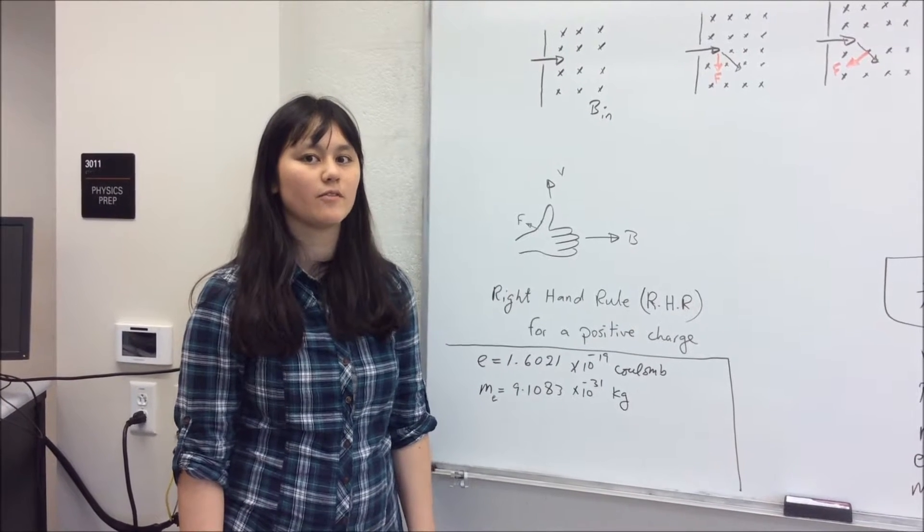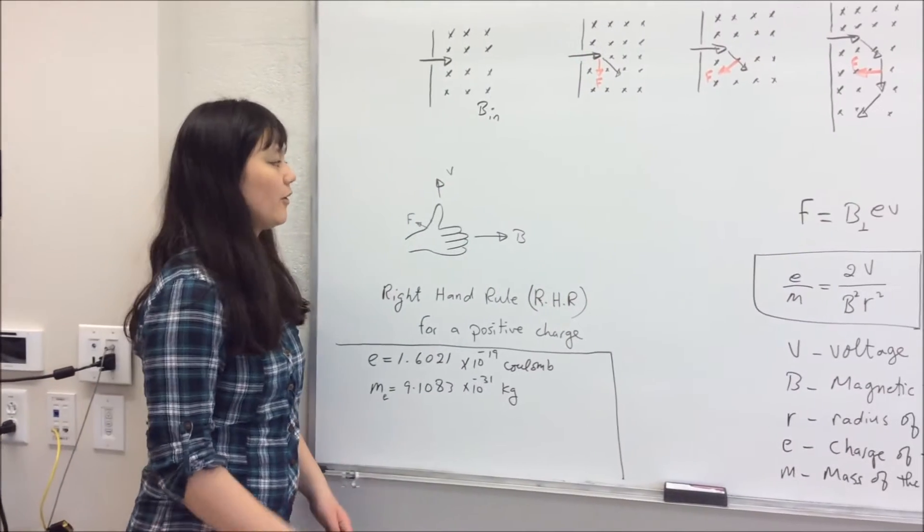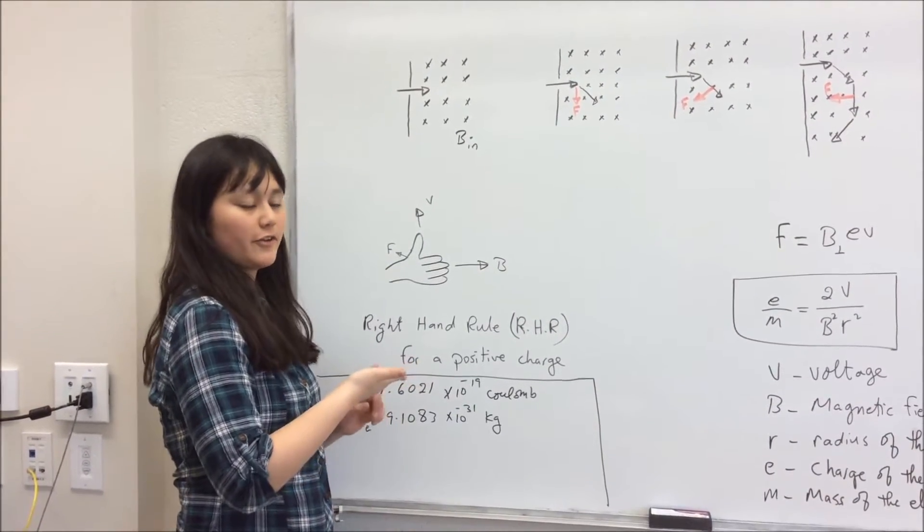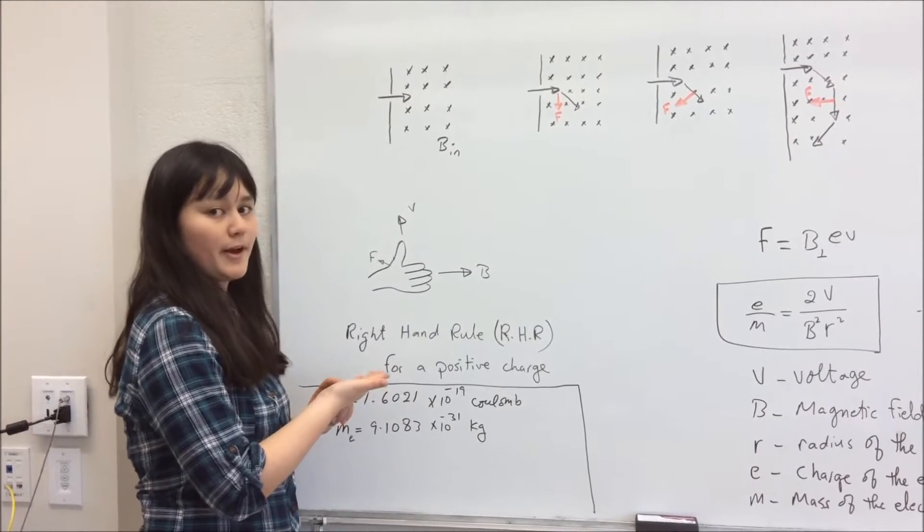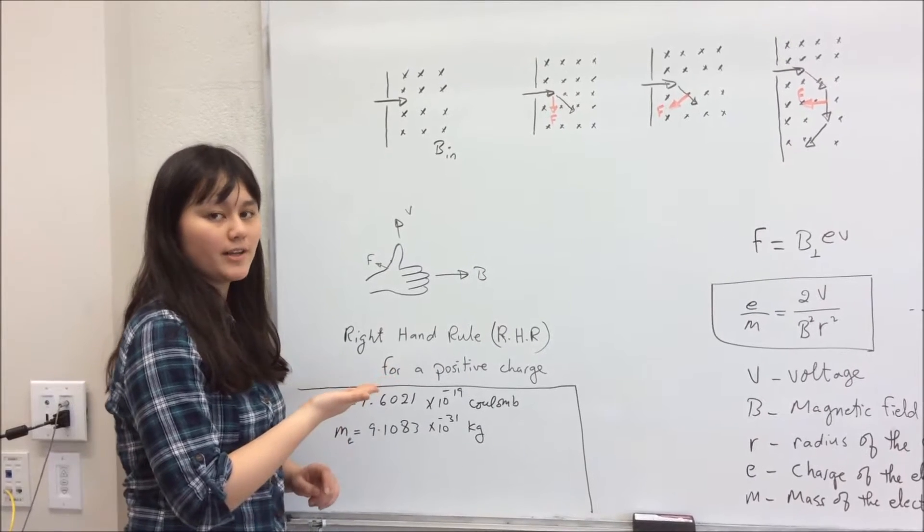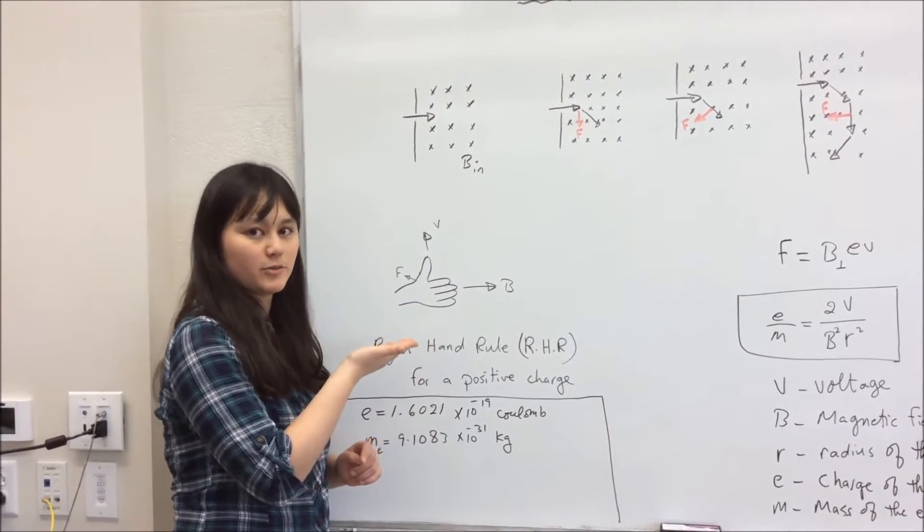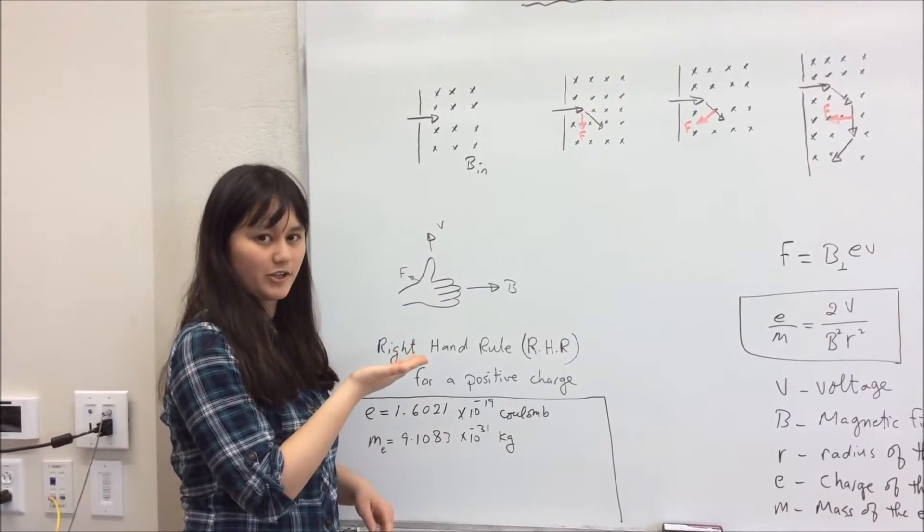Now we are going to be using the right-hand rule to determine the force of an electron. In the right-hand rule, your thumb is going to be the velocity of the electron, the direction of your fingers is going to represent the magnetic field, and the force is going to be represented by your palm. Normally for a positive charge the force would be going up, but since we are dealing with electrons which have a negative charge, the force is going to be going in the opposite direction, which is down.